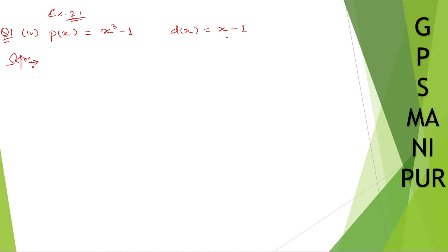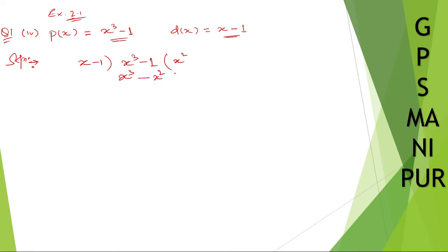Write down this one in descending order, so it will be x minus 1. And write down here x cube minus 1. Now x into x square will be x cube. x square into x is x cube. Minus 1 into x square will be minus x square.